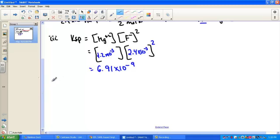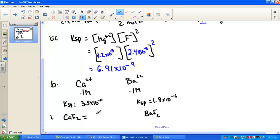Back on the work page, letter B: The calcium ion, Ca²⁺, was given as 0.1 molar, and the barium ion, Ba²⁺, was also 0.1 molar. KSP for calcium fluoride is 3.5 times 10 to the negative 11th, and KSP for barium fluoride is 1.8 times 10 to the negative 6th. Which one will precipitate first? We understand that the fluoride is the precipitate. When calcium fluoride dissociates, we get a calcium ion and two fluoride ions. For barium fluoride, we get a barium ion and two fluoride ions.